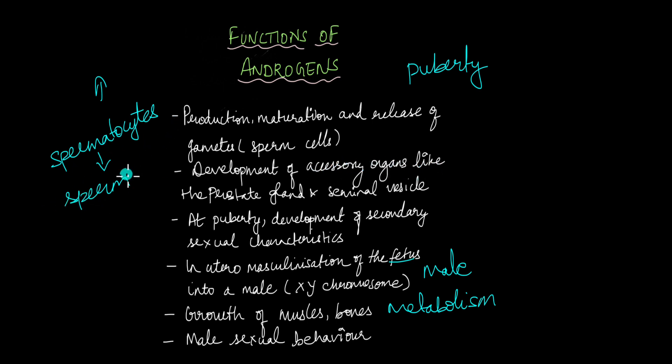Androgens are also involved in the development of accessory organs for the healthy production of sperm. Not just spermatocytes, but you need input from other organs like the prostate gland, the seminal vesicle, epididermis and a lot of other male accessory organs. So the androgens are also involved in the development of those organs.